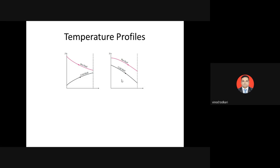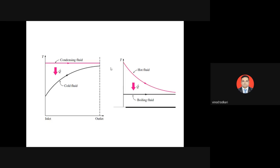The temperature profiles of parallel flow and counter flow heat exchangers show THI, THO (hot fluid) and TCI, TCO (cold fluid). In parallel flow both fluid arrows point in the same direction; in counter flow they point in opposite directions. For condensers and boilers, latent heat is involved — there is phase change without temperature change.